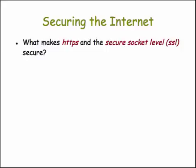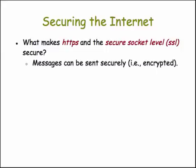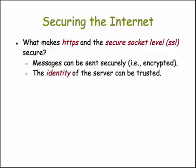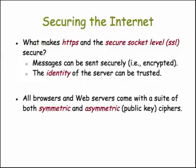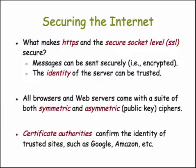What does making these protocols secure mean? It means two things: that messages can be sent securely, meaning encrypted, and secondly, that the identity of the server can be trusted. When we think we're communicating with Amazon, we want to make sure we're communicating with Amazon and not some rogue site. All browsers and web servers come with a suite of both symmetric and asymmetric ciphers. They also use digital certificates provided by certificate authorities that enable them to confirm the identity of servers and other computers on the internet.